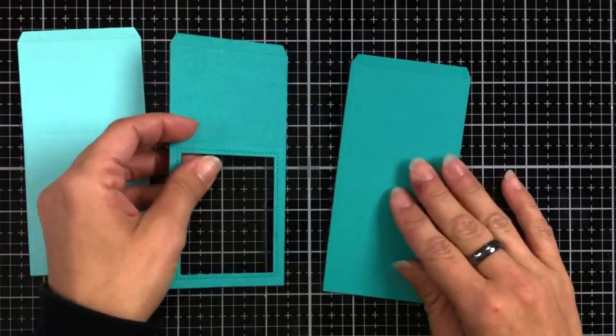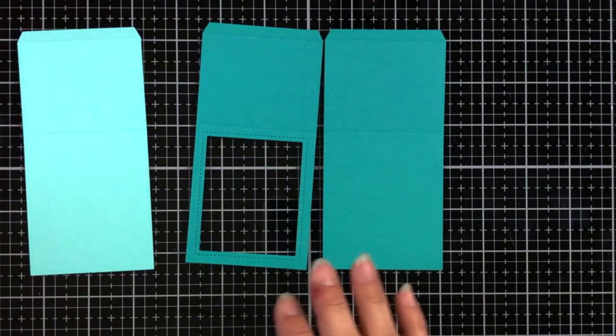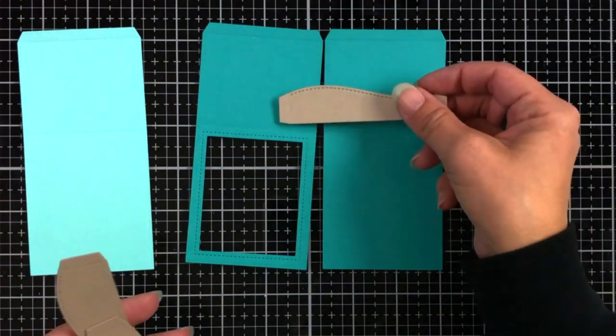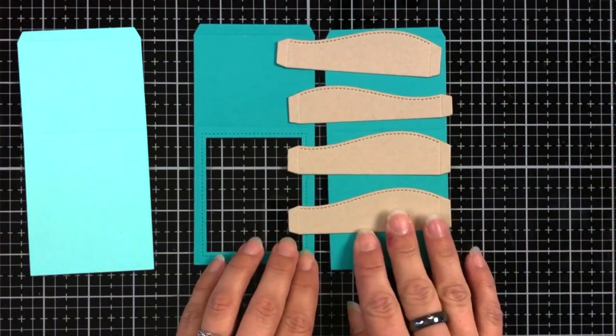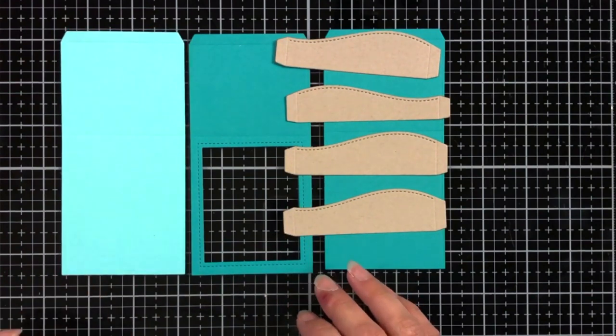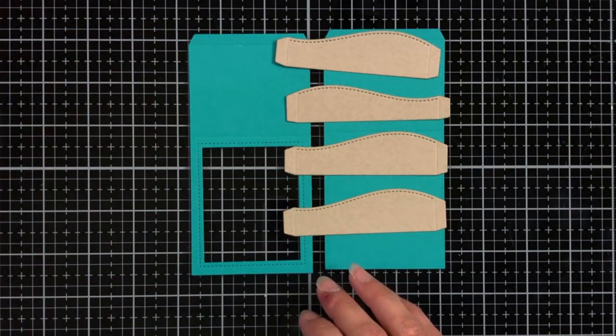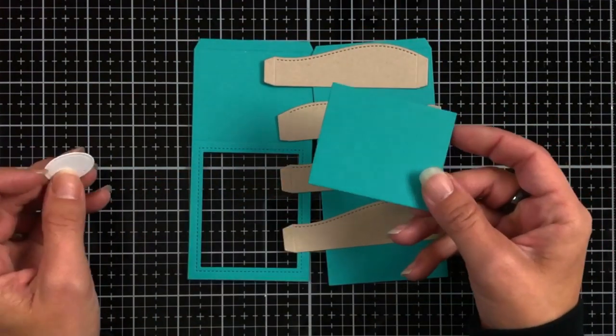Using that shadow box die, I die cut a solid panel from both Peacock and Mermaid cardstock. My window panel for my box is also from the Peacock cardstock. And then I'm going to use these pieces from Craft Cardstock. These are the inserts that go in the shadow box. And I saved that rectangle from die cutting my window.